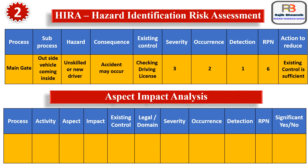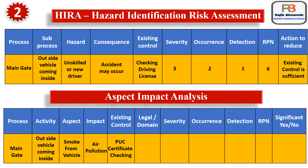Now, Aspect Impact Analysis. The table has: process — main gate; activity — outside vehicle coming inside the premises; aspect — smoke from vehicle; impact — air pollution; existing control — Pollution Under Control (PUC) certificate checking, which is a legal requirement. Scores are: severity 4, occurrence 6, detection 1, giving an RPN of 24. If RPN is more than the cut-off mark, the organization takes an EMP — Environment Management Program. If below, no action needed. However, since this is a legal requirement, it is taken as significant.